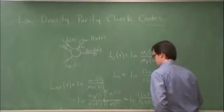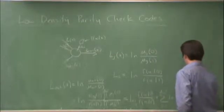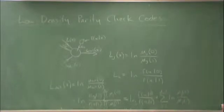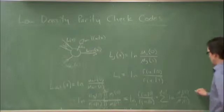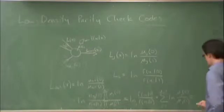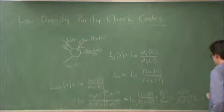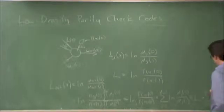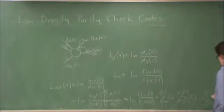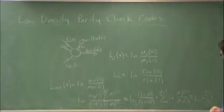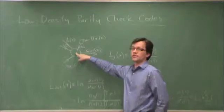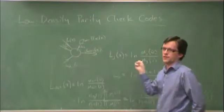Of natural log Uj of 0 divided by Uj of 1, which is equal to Lc plus the sum from i equals 1 to Db minus 1 of Lj. So in other words, by using the log-likelihood ratio, the operation at the variable is just the sum of the inbound messages.